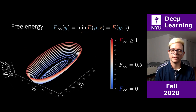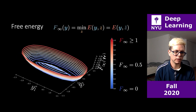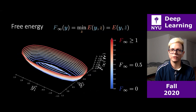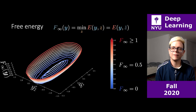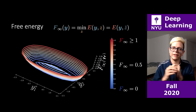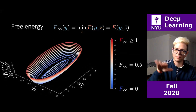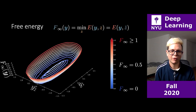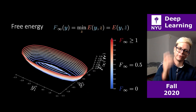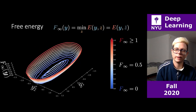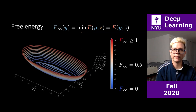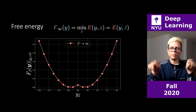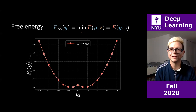That central peak may or may not be wanted. Today's lesson starts by learning how to relax this zero temperature limit free energy to something smoother — a free energy without local minima. Taking a cross-section at y1 equals zero, we can see those two parabolic branches clearly.